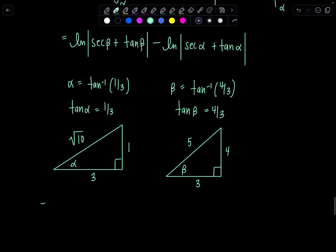Here we go. We have natural log absolute value secant of beta. So you come to the beta triangle, secant is ratio of hypotenuse over adjacent. So that would be five over three, plus tangent of beta is four over three, minus natural log absolute value secant of alpha, that's hypotenuse over adjacent, so that's rad 10 over three, plus tangent of alpha, which is one over three.